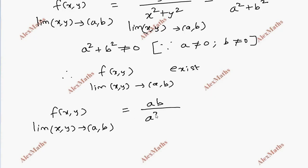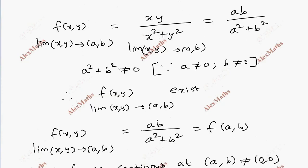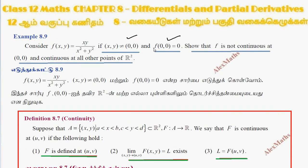This limit equals ab/(a²+b²), but this is also equal to f(a,b). So the limit value equals the function value. Therefore, f is continuous at (a,b) where (a,b) is not equal to (0,0). Since (a,b) is a general point, f is continuous at all points of R².